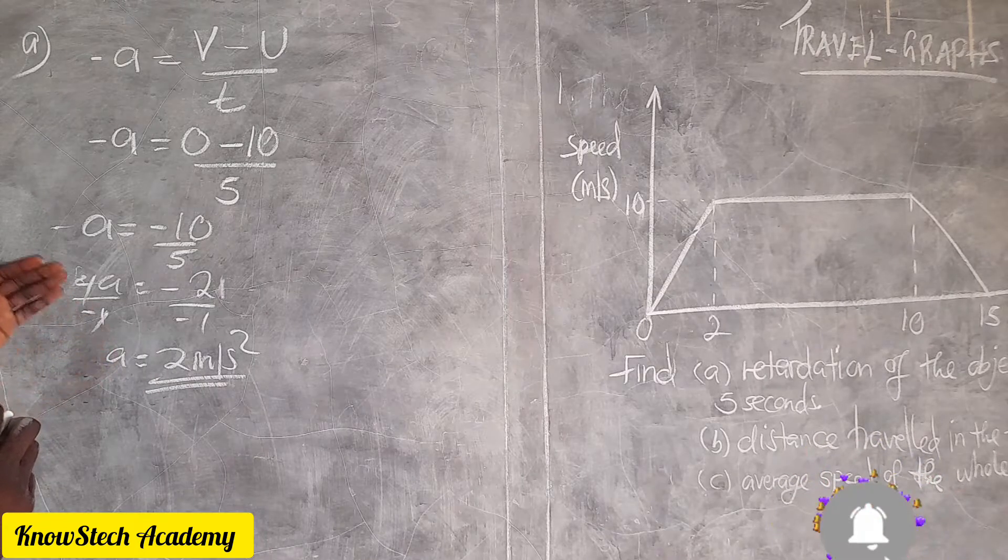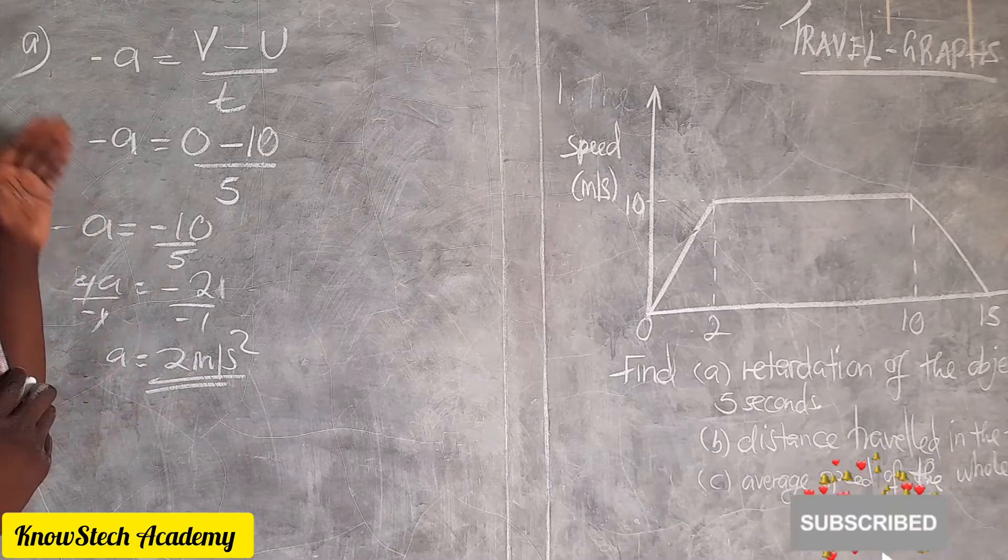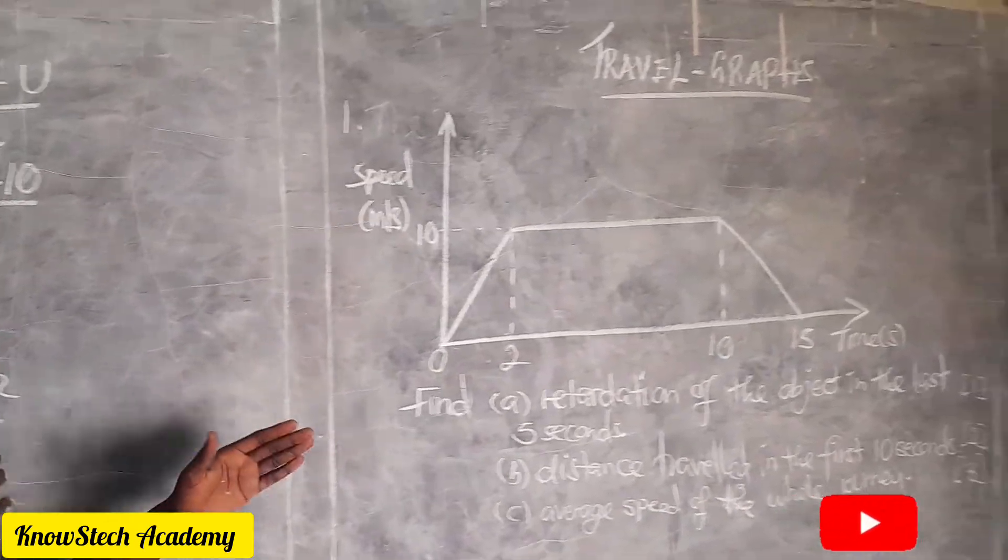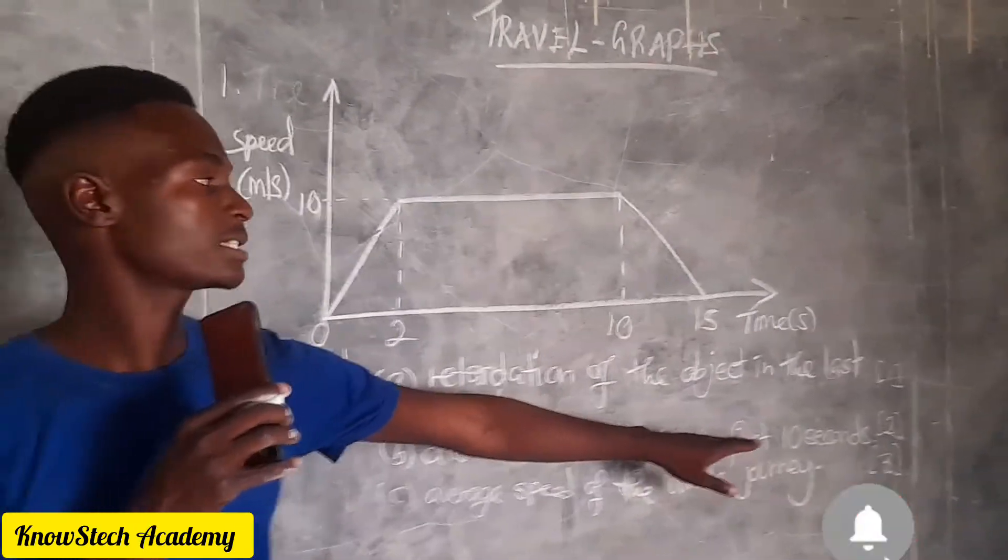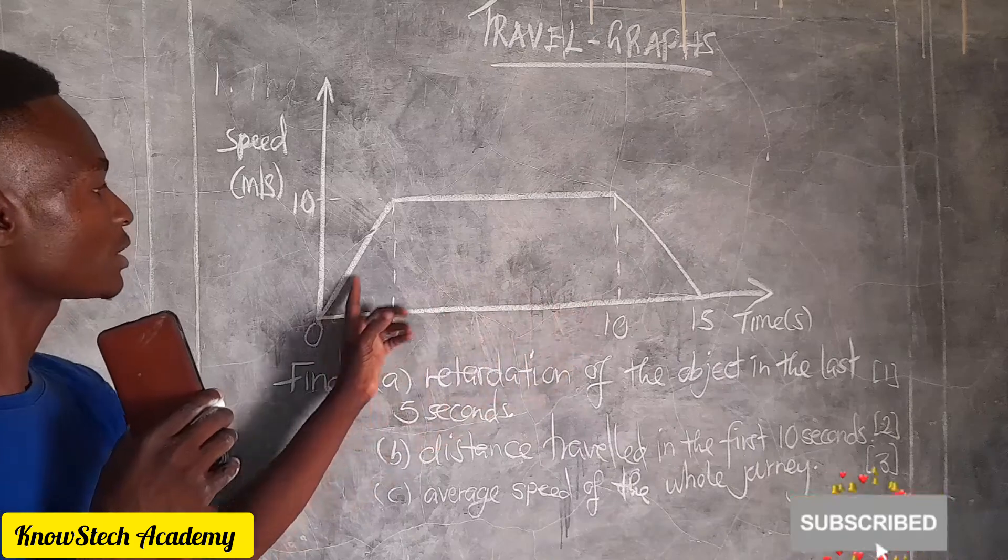The second question is asking us to calculate the distance traveled in the first 10 seconds. So from here if you look at the shape, you have two shapes here.